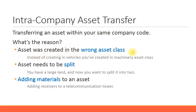One example is an asset was created in the wrong asset class. For instance, you wanted to create a vehicle in the vehicle asset class but accidentally created it in the machinery asset class. If there are no transactions, you can delete and recreate it. But if you've already posted acquisition transactions and depreciation, you can't delete that asset.